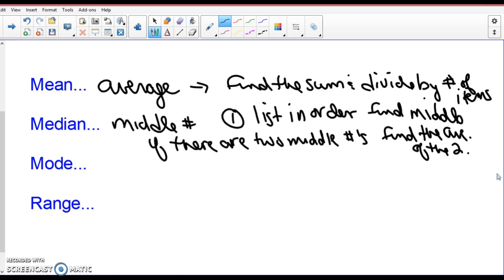Mode - what's the one that appears the most? Mode is the most. You may have more than one. I'm going to look at an example in a minute.